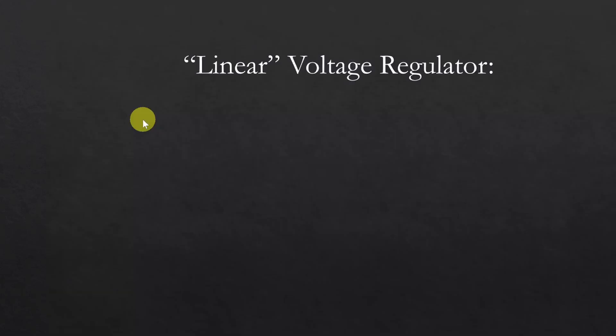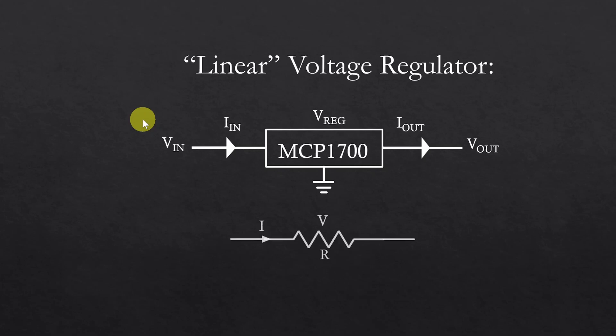So in steady state, the linear regulator behaves like a simple resistor and voltage drop across the regulator is given by the difference between input and output voltage of the regulator.